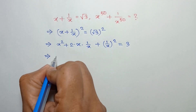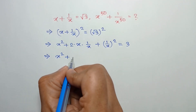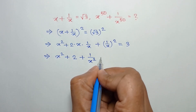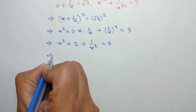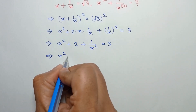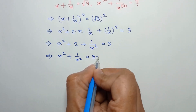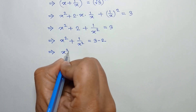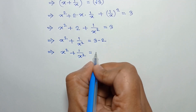So x square plus — since x and 1/x cancel out — it remains 2 plus 1 over x square is equal to 3. Taking this 2 to the right side, we can write x square plus 1 over x square is equal to 3 minus 2, which is 1.